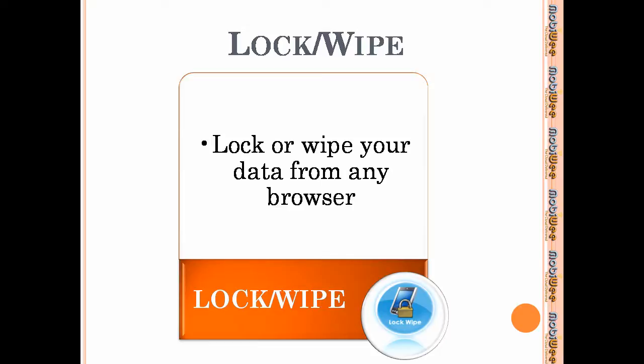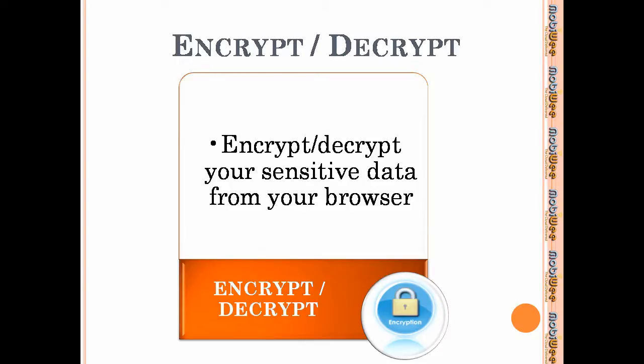Next, we have the lock and wipe service. This allows you to wipe your device data and restore it to factory settings, or lock it in the event of loss or theft. This service is useful whether you are simply uncomfortable with your information being public, or you have sensitive data that needs protection. The encryption service allows you to encrypt and decrypt the data on your device so your data is secure, even if it gets into the wrong hands.